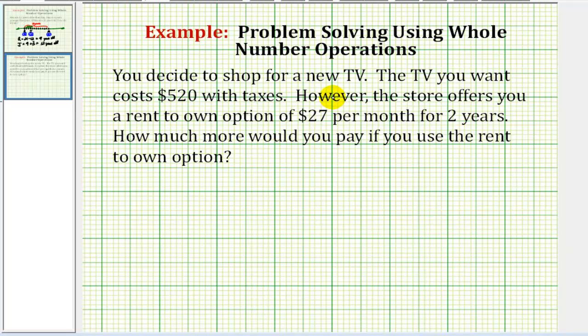In this problem, you decide to shop for a new TV. The TV you want costs $520 with taxes. However, the store offers you a rent to own option for $27 per month for two years. How much more would you pay if you use the rent to own option?